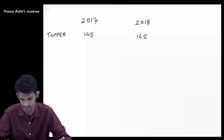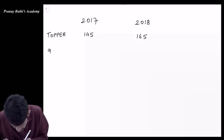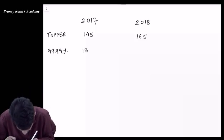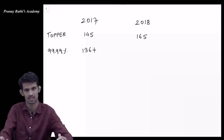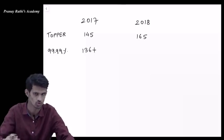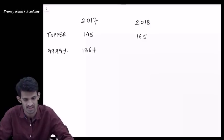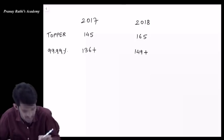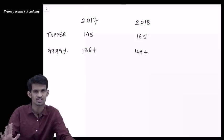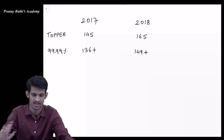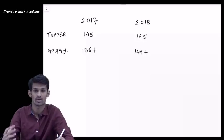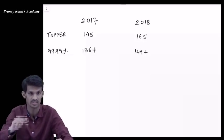If you are targeting 99.99 percentile, you had to score 136 plus marks in 2017, so 136 to 145 was 99.99 percentile. Similarly for 2018, it was 149 plus, so 149 to 165 range was 99.99 percentile.